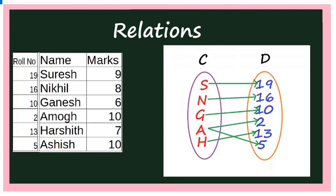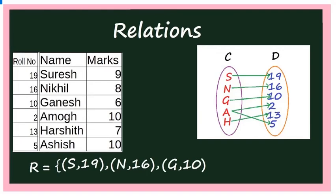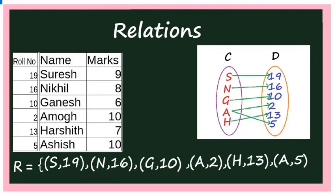If you represent this mapping as ordered pairs, R = {(S,19), (N,16), (G,10), (A,2), (H,13), (A,5)}. And this is the relation.